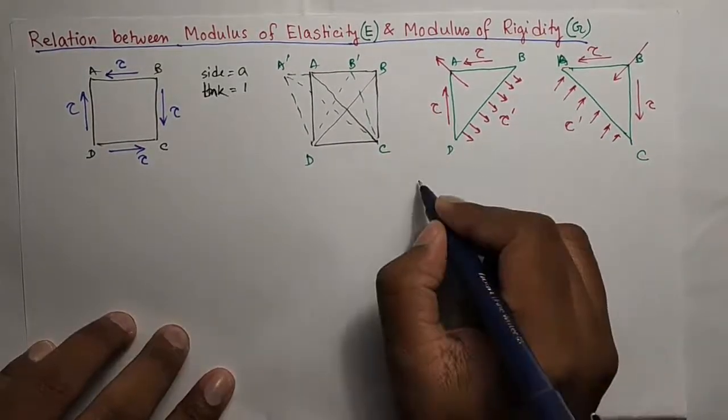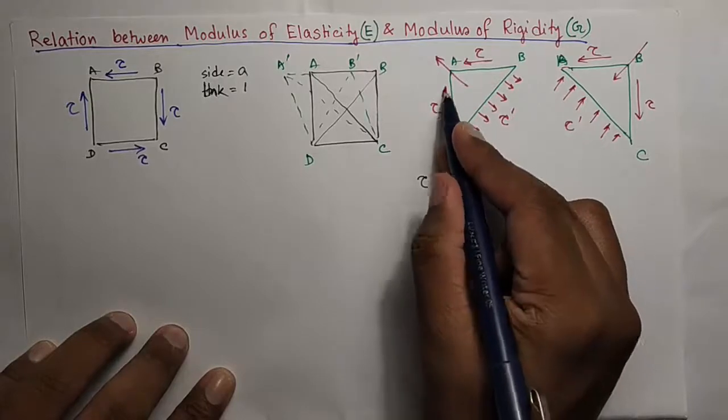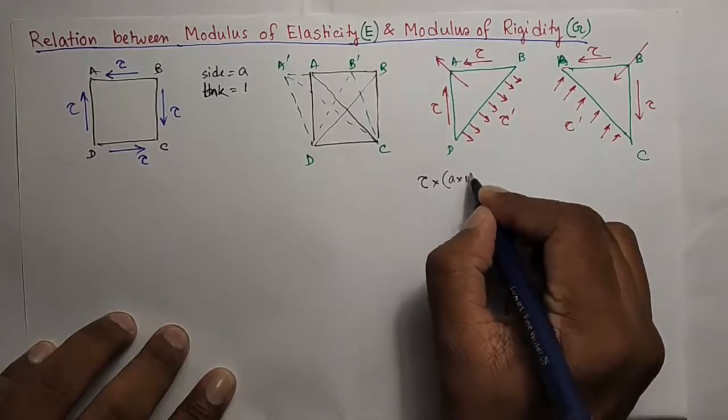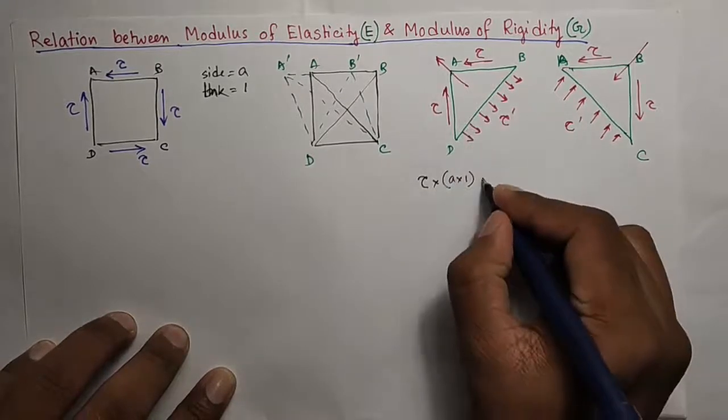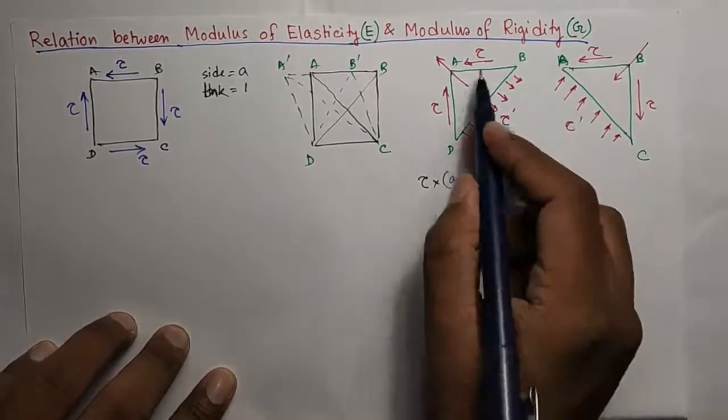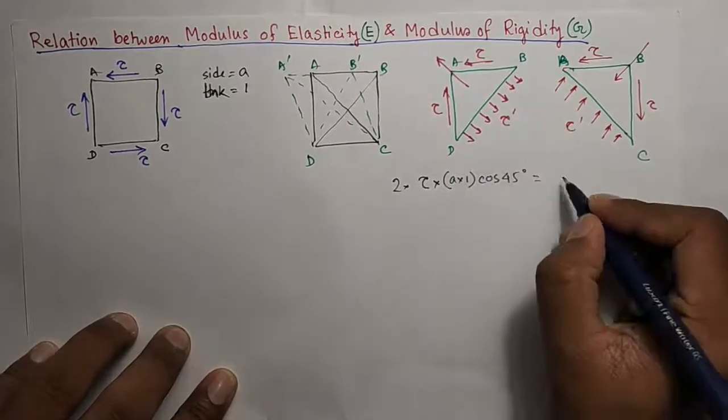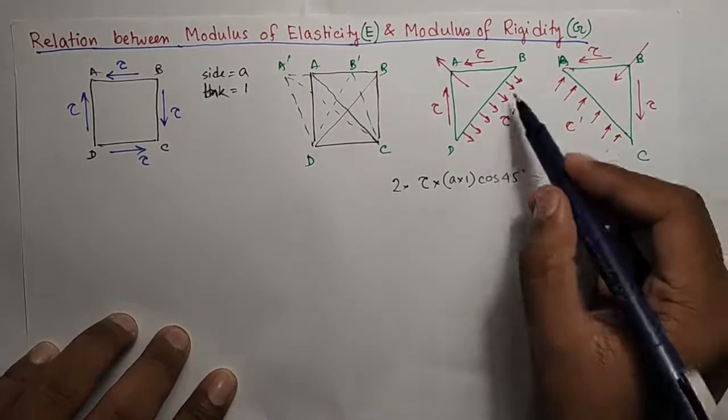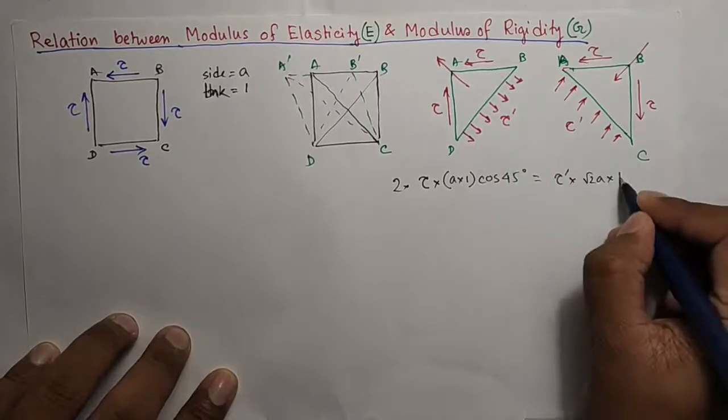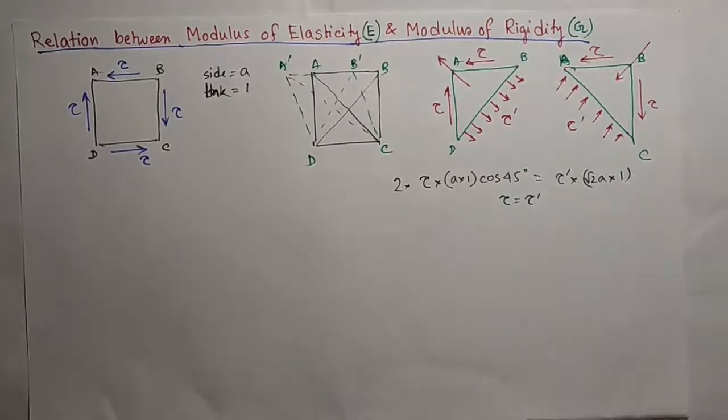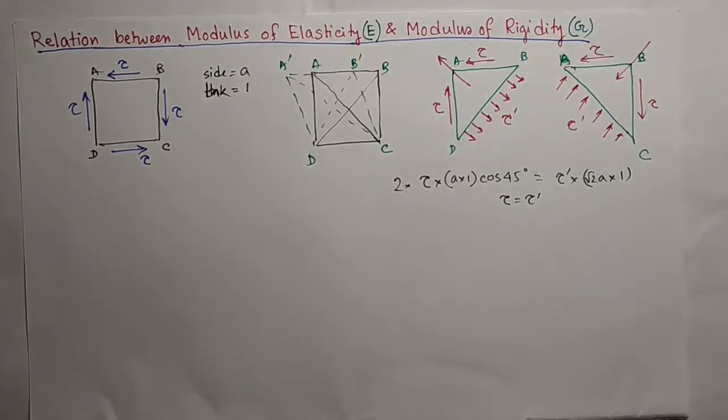This force here is stress into area. Area is the plane here is length A and thickness 1. So, A into 1. And this component will be cos 45 degree. And that is 2 tau. So, 2 into it will be equal to the force here which is tau dash into the area. The length is root 2 A into thickness 1. Solve this you get tau equal to tau dash. Now we got our tensile and compressive stress. Both are equal to the shear stress applied.